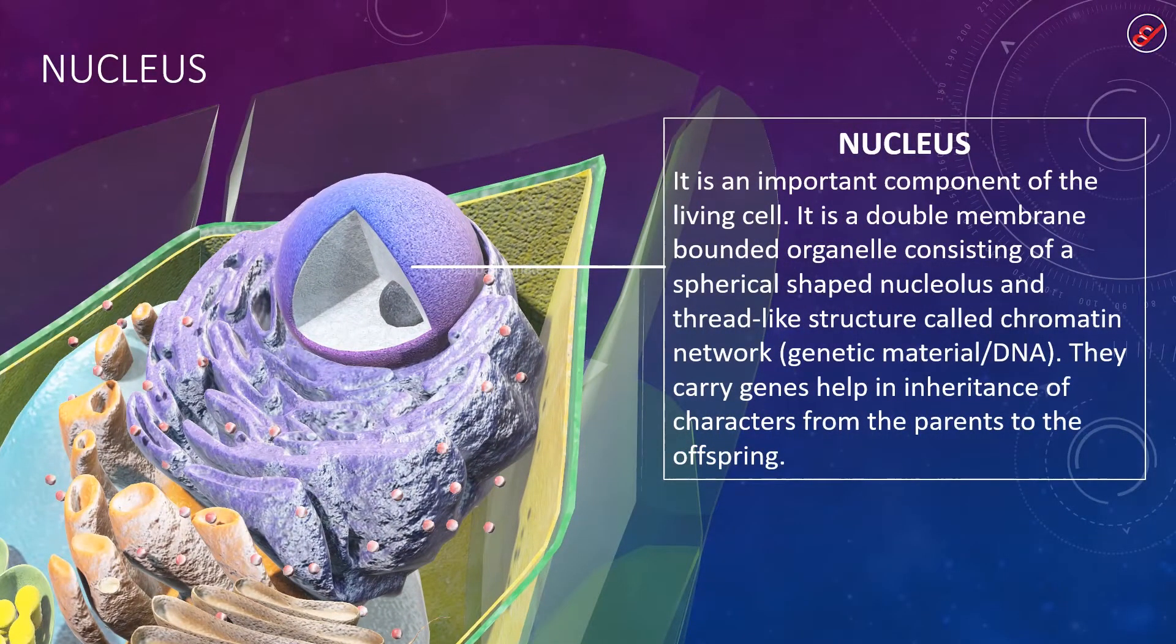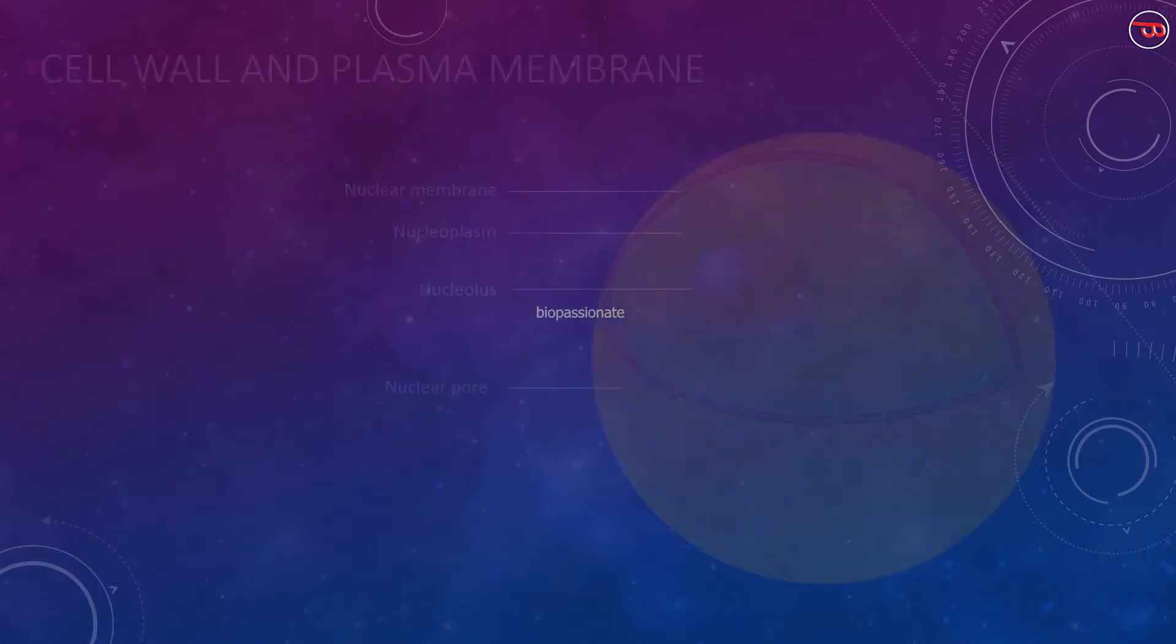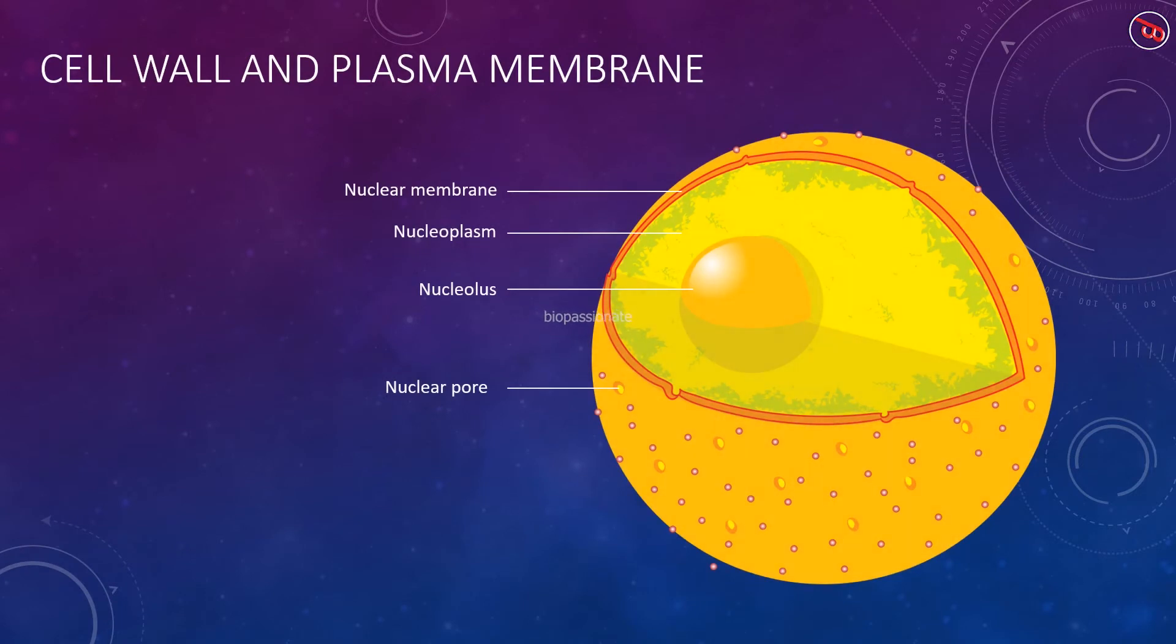Nucleus is an important component of the living cell. It is a double membrane-bounded organelle consisting of a spherical-shaped nucleolus and thread-like structure called chromatin network. These chromatin networks or chromosomes carry genes that help in inheritance of characters from parents to the offspring. This picture depicts the structure of a nucleus having a nuclear membrane with numerous tiny pores called nuclear pores on their surface.